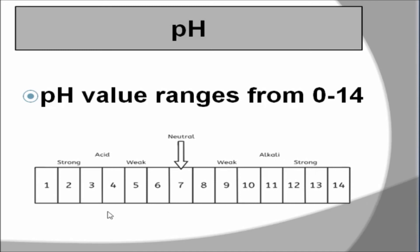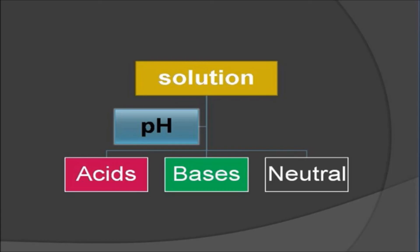Now what is the classification? Based on the pH, we can classify solutions into three types. Acids, bases, neutral. Acids have less than 7 value. Bases have more than 7. Neutral have pH value of 7. That is about the pH and types of solutions.